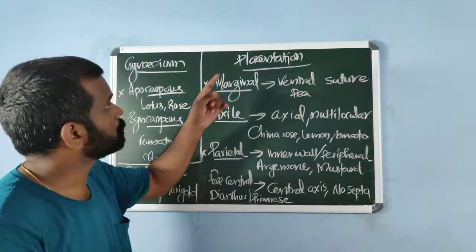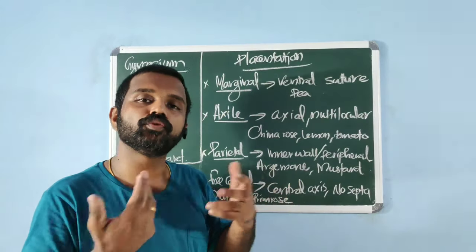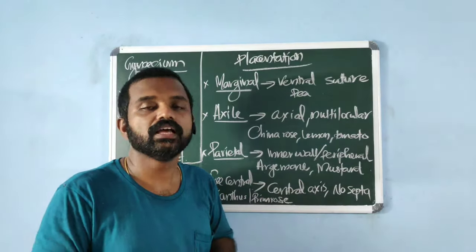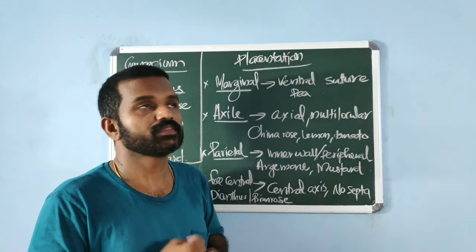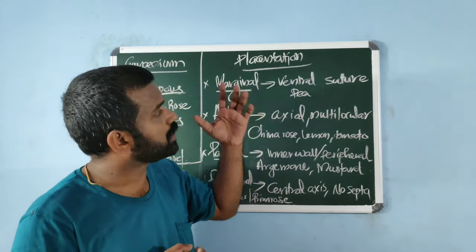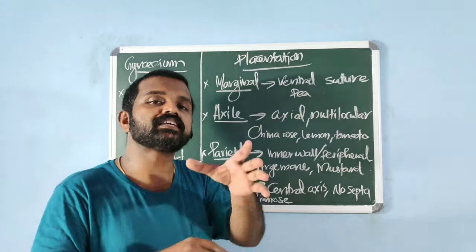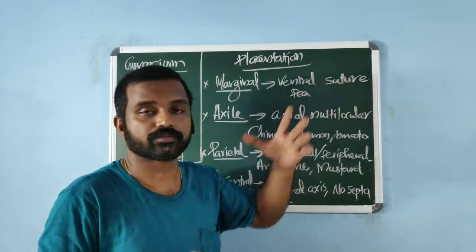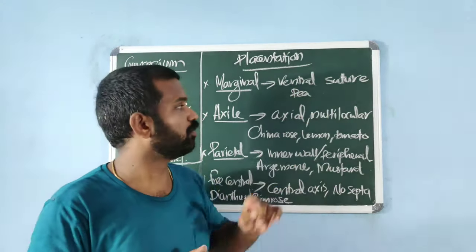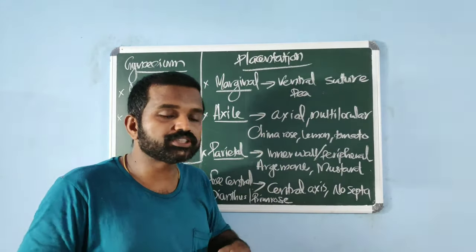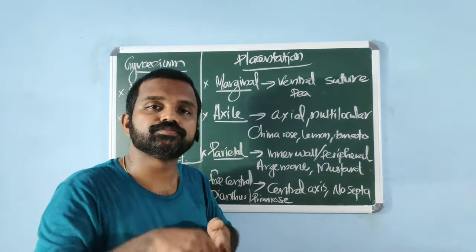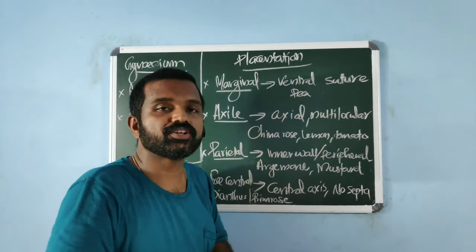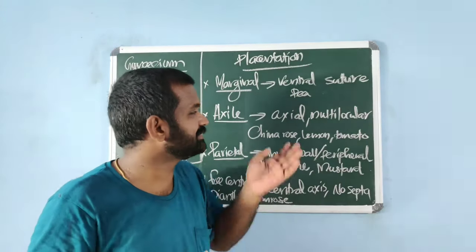Placentation is the arrangement of ovules on the placenta, which is a cushion-like structure inside the ovary. Marginal placentation: the placenta forms a ridge along the ventral suture of the ovary and ovules are arranged in two rows — typical example is the pea family. Axile placentation: the placenta is axial and ovules are arranged in a multilocular ovary — examples: China rose, lemon, tomato.